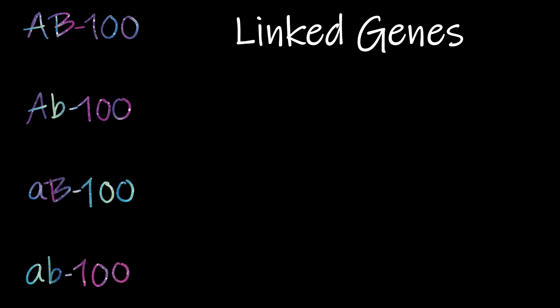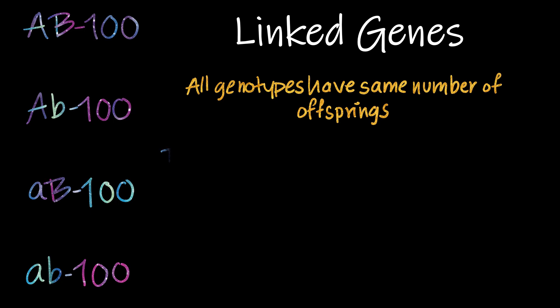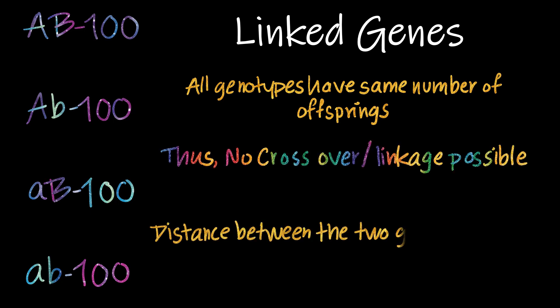In some conditions, the number of offsprings for all the genotype is the same. Thus, we can say that the genotypes are not linked, i.e. no crossover or linkage is possible and the distance between the two genes cannot be determined.